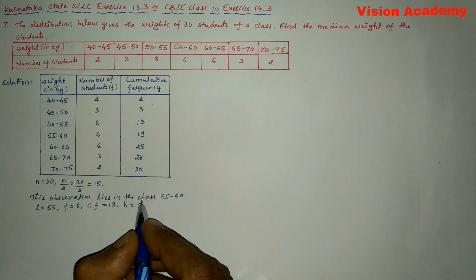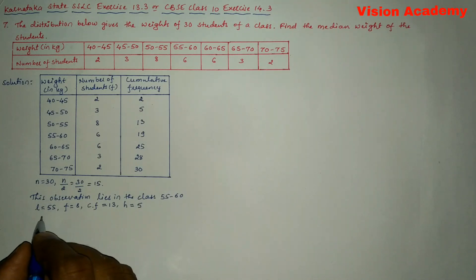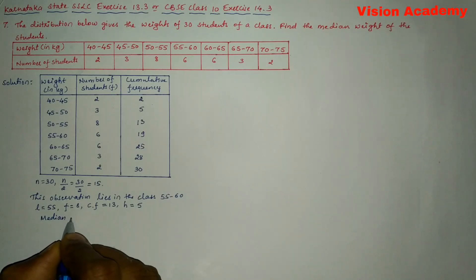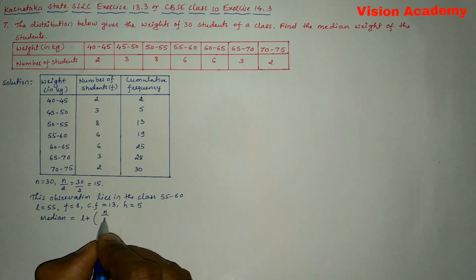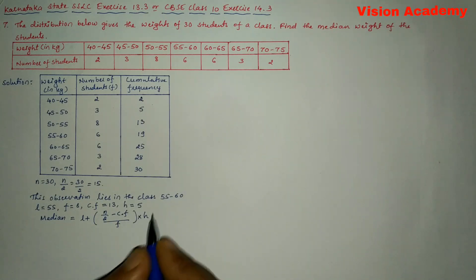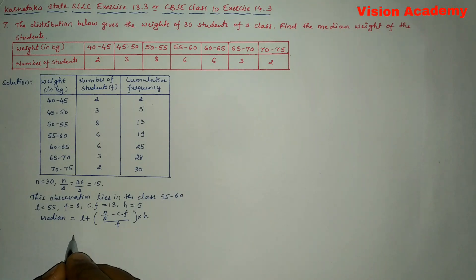Now let us write the formula to find median of the given data. So here we will write median equals l plus n divided by 2 minus cumulative frequency 13, whole divided by frequency 6, into h is class size.